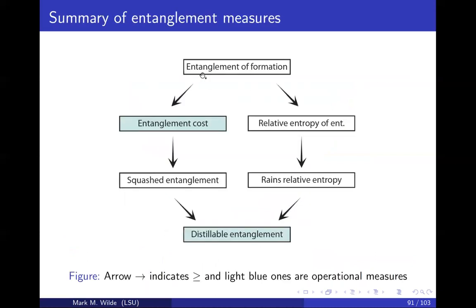We've talked about a lot of different entanglement measures and the tasks of entanglement distillation and dilution, with the corresponding quantities of distillable entanglement and entanglement cost. This gives a sense of ordering: entanglement of formation is an upper bound on entanglement cost and on relative entropy of entanglement. Squashed entanglement lies between entanglement cost and distillable entanglement. Rains relative entropy is smaller than the relative entropy of entanglement and is an upper bound on distillable entanglement. For some states, Rains relative entropy is the better bound, and for others squashed entanglement is better, so at the moment we need both.